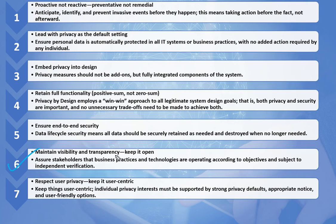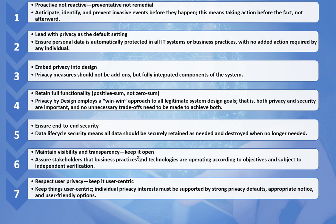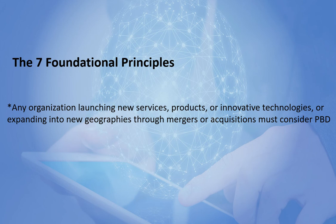The sixth principle is Maintain Visibility and Transparency — during the period when you hold a user's personal information, you need to have proper visibility and transparency of that data. The seventh and final principle is Respect User Privacy and Keep it User-Centric. Individual privacy interests must be supported by storing privacy defaults, appropriate notice, and user-friendly options. If you are collecting any personal information, you need to give appropriate notice to the user and fulfill their rights.